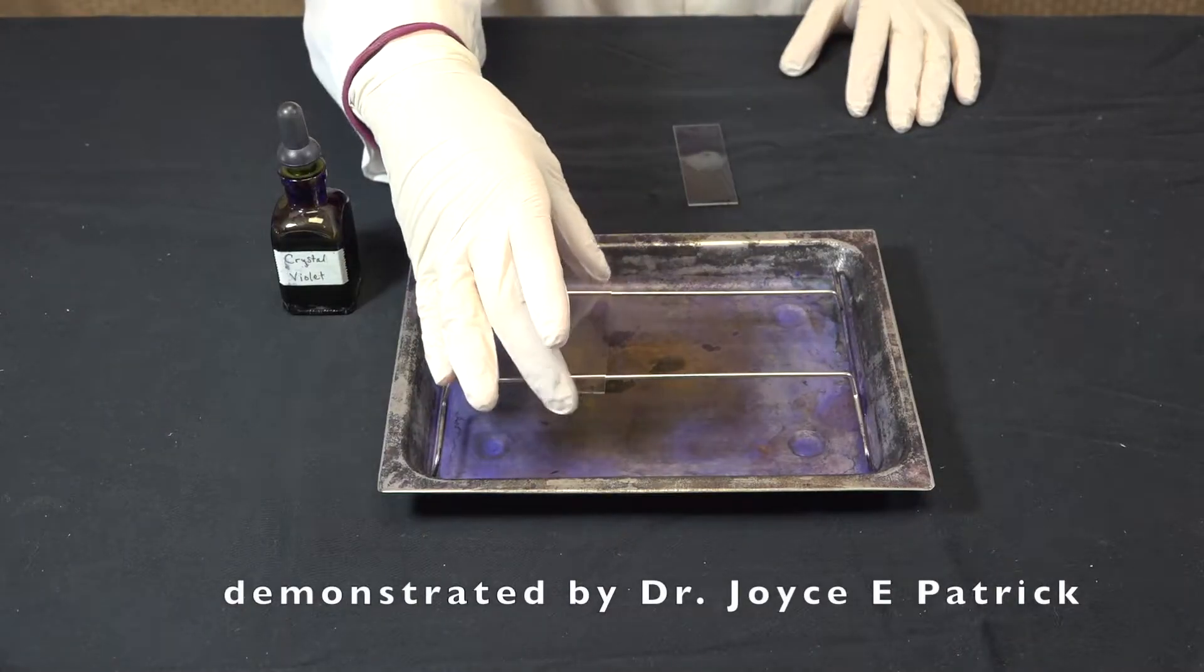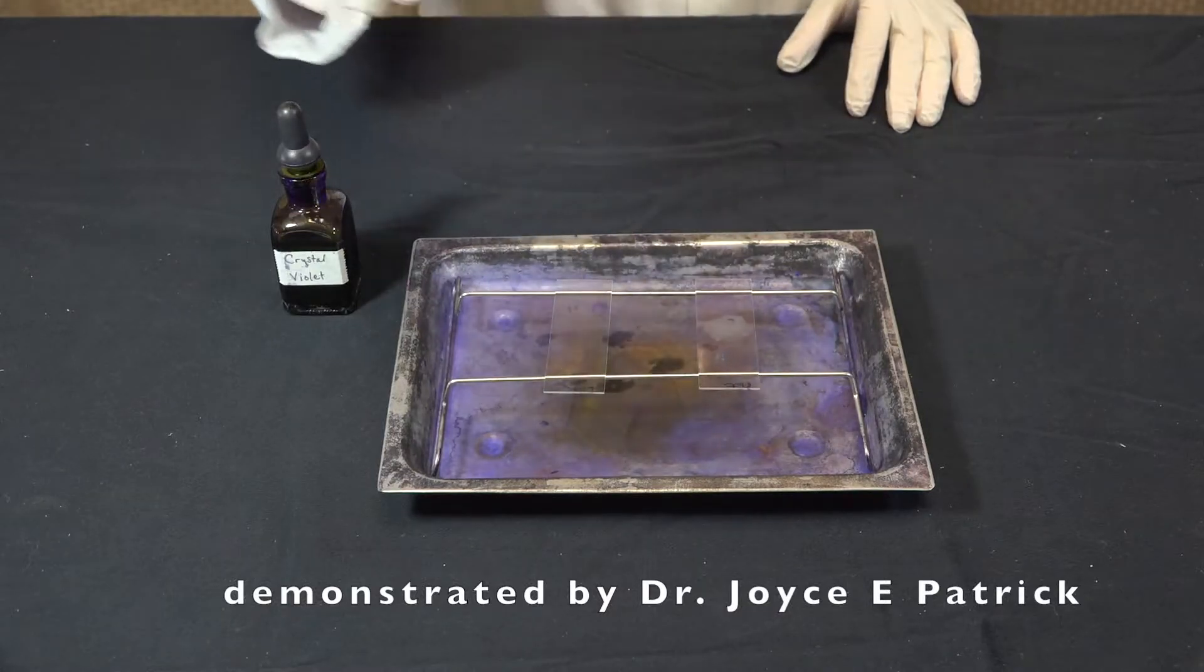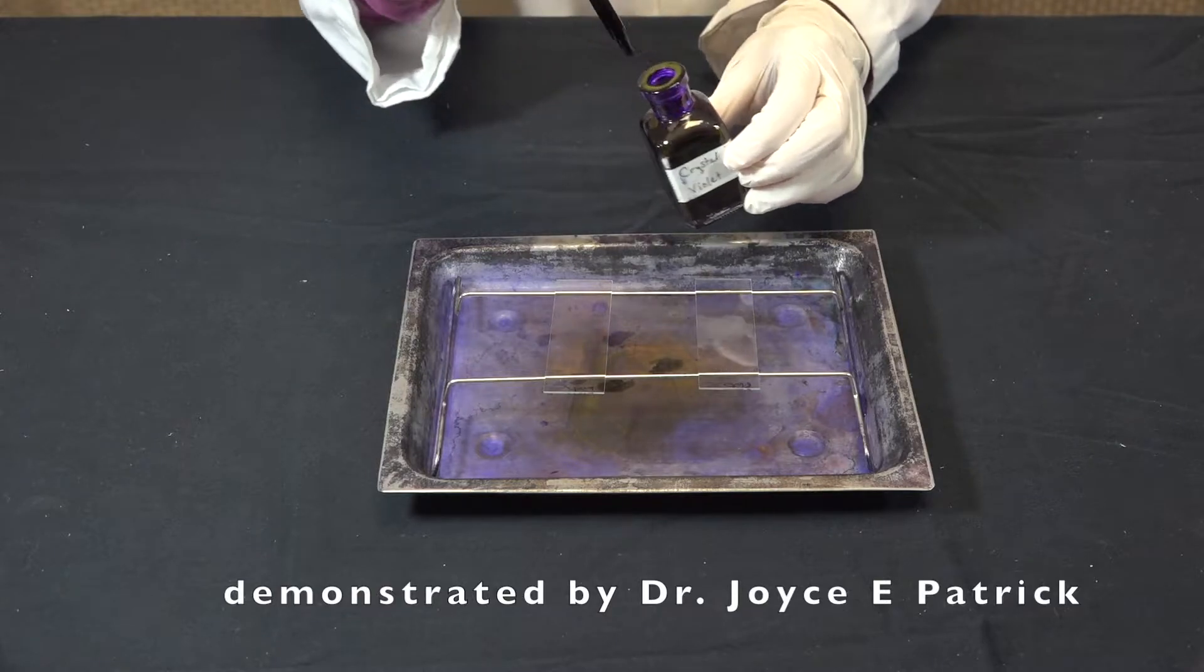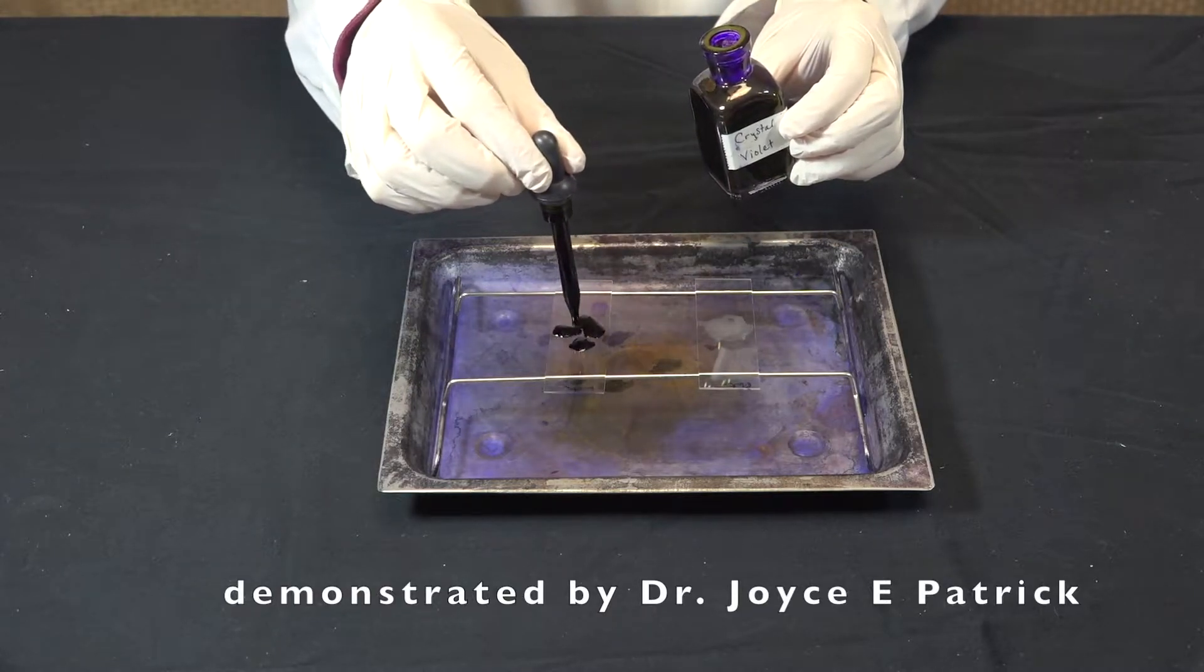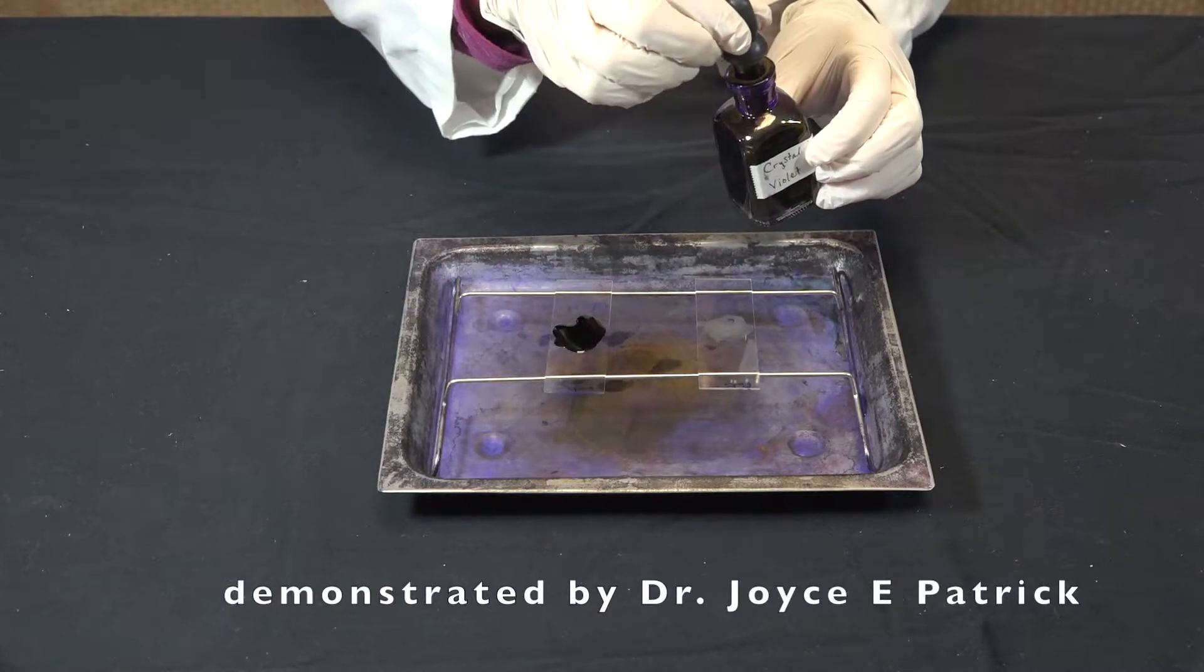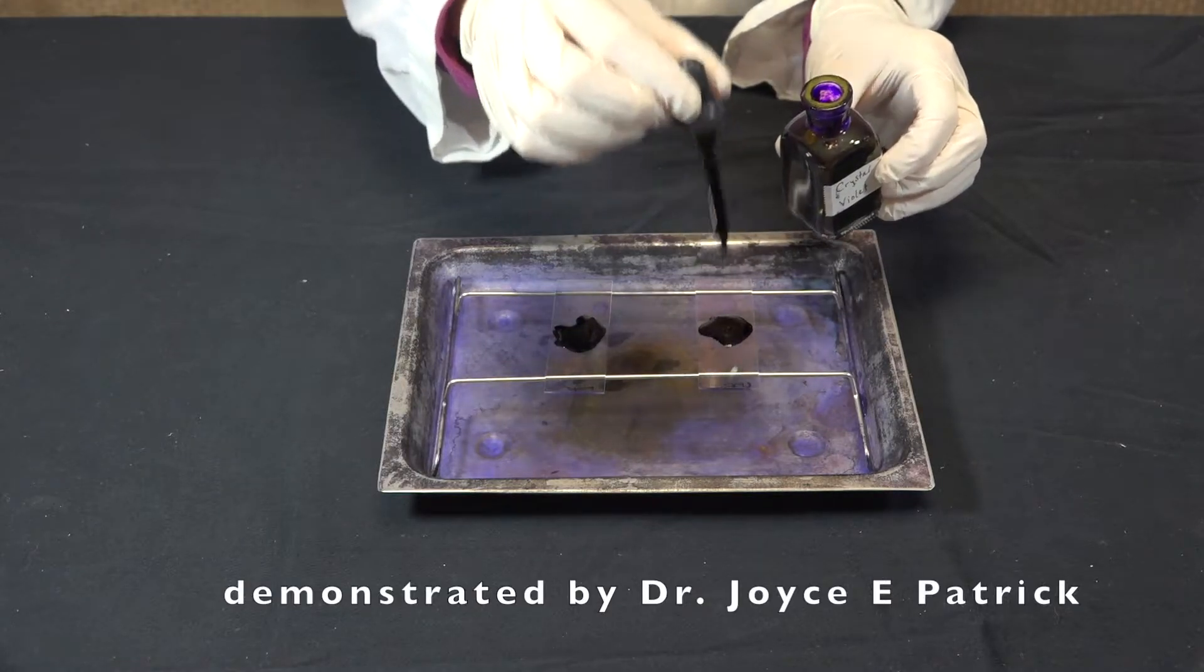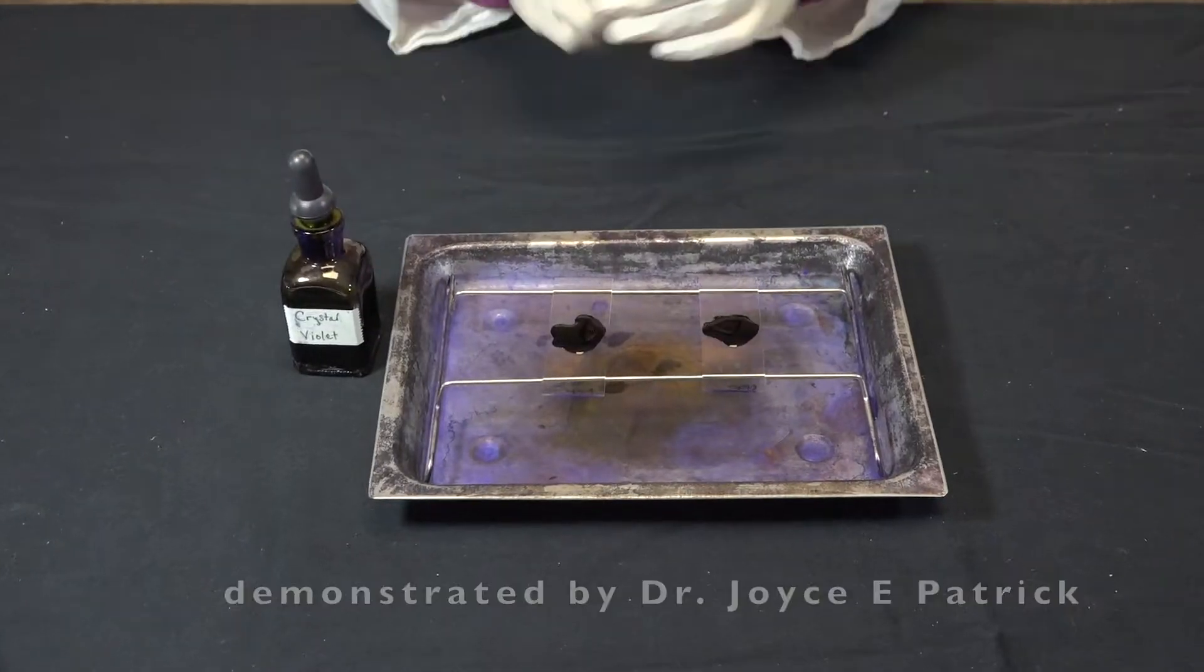I'm going to place my slides on the staining tray and add our primary stain crystal violet. Make sure you add enough stain to completely cover the smear. Now I'll wait 60 seconds.